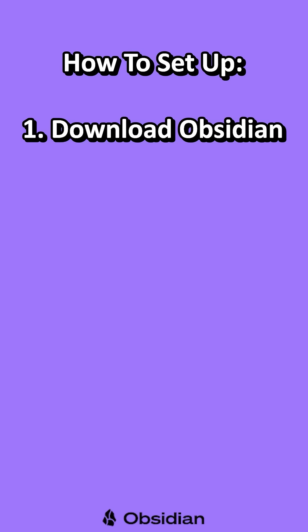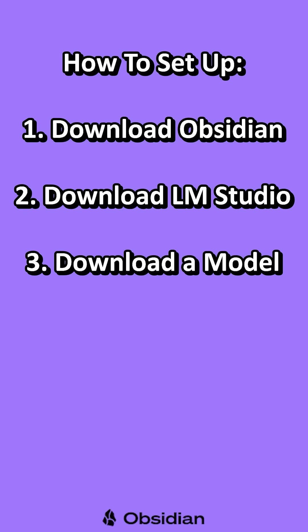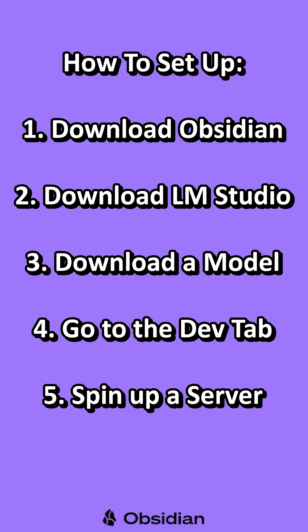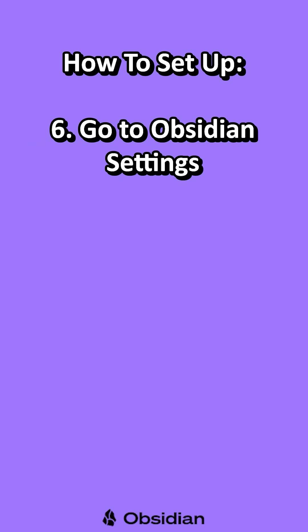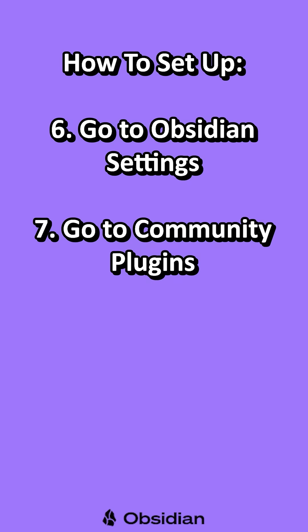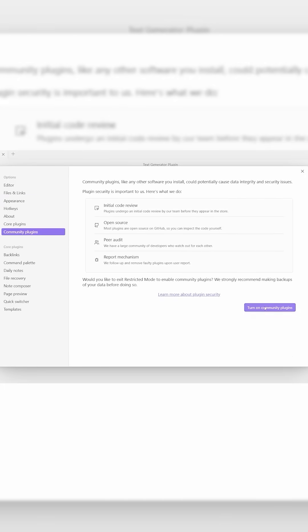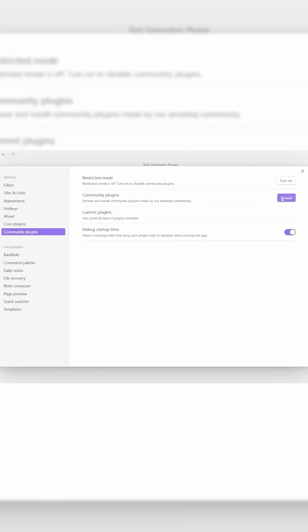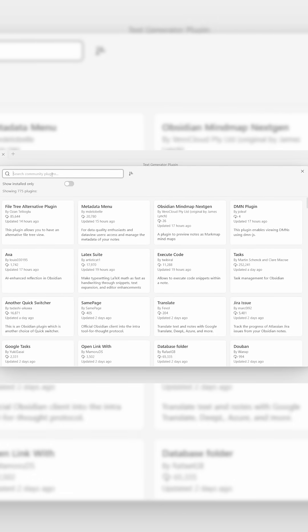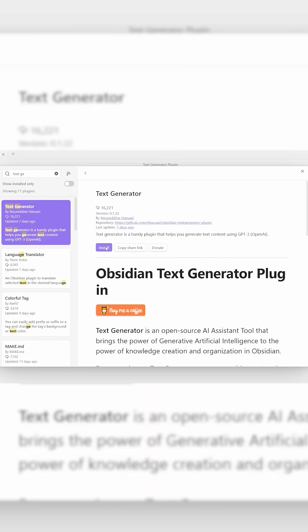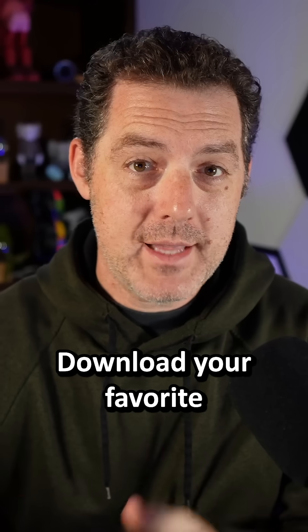Download Obsidian, download LMStudio, download your favorite model, go to the developer tab and spin up a new server. Open up Obsidian, go to Settings and then Community Plugins, then click Browse. There are a bunch of AI-driven plugins, so download any of them and just make sure to take that URL from LMStudio and place it right into the plugin.